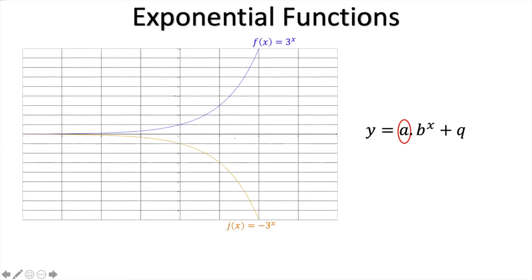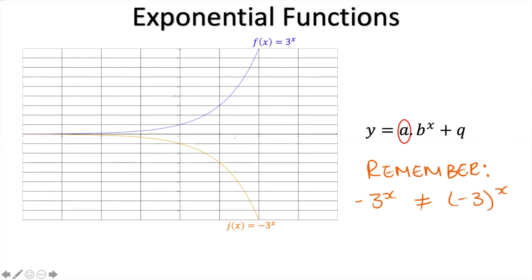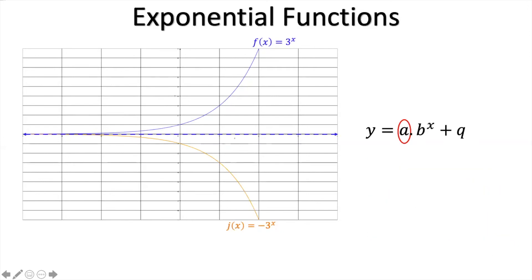Let's make a negative. You might wonder why b is now negative — but remember: negative 3 to the power of x is not the same as (negative 3) in brackets to the power of x. The x applies only to the 3, not to the negative without brackets. So negative 3 to the power of x is the same as negative 1 times 3 to the power of x. We've changed a from 1 to negative 1, and that flips the graph upside down. The horizontal asymptote of y equals 0 still holds for both graphs.